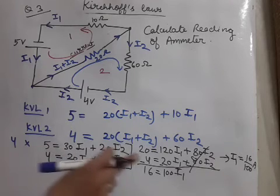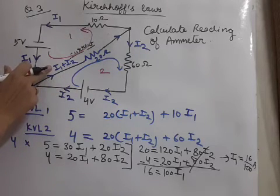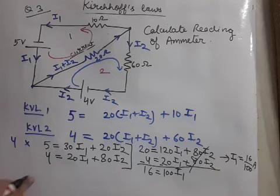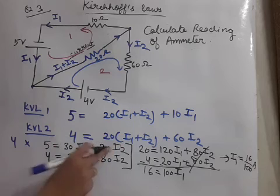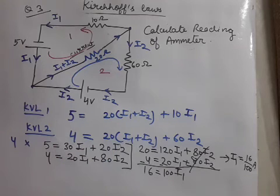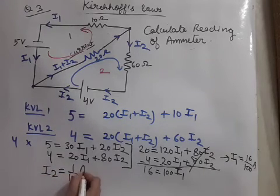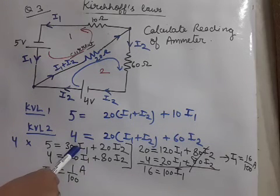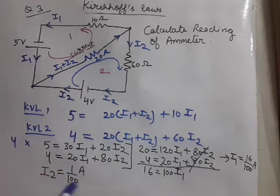Now this I₁ is not sufficient. We have to find the current of this branch where ammeter is connected. So I₁ we have obtained, we have to still obtain I₂. As we substitute I₁ in any of the equation and we solve for I₂, we are getting I₂ equal to 1 by 100 ampere. Student, this you will get when you will substitute I₁, that means 16 by 100 here, and you will solve for I₂.